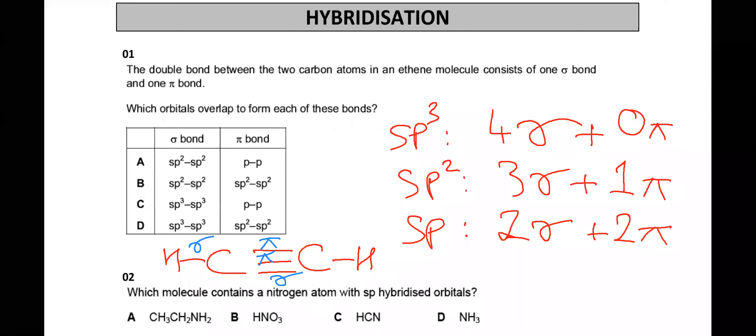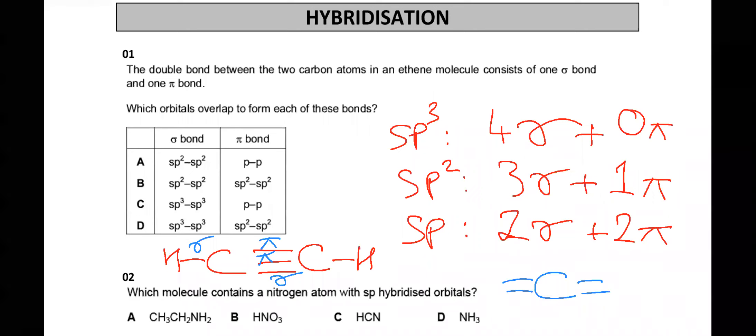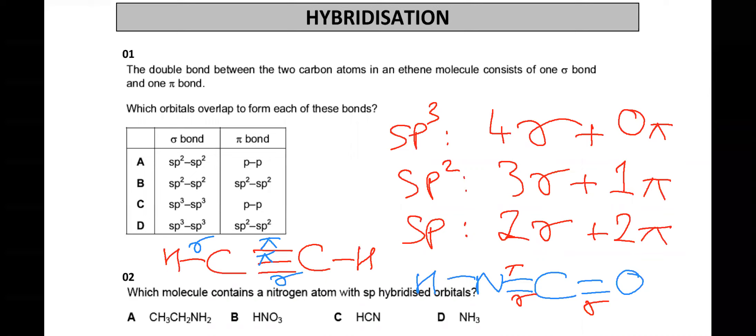In an alkyne, each carbon has two sigma and two pi bonds. NCO is the same type of molecule — it also has two sigma and two pi bonds per carbon. Carbon in that molecule has two double bonds but the total is two sigma and two pi, so it is the same type of hybridization: SP hybridization.